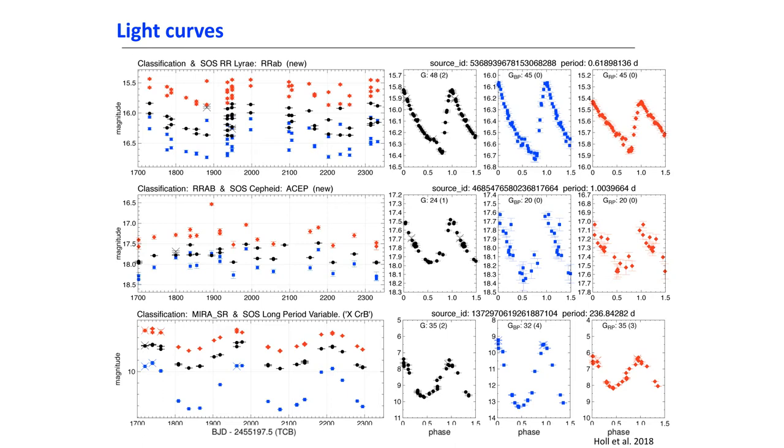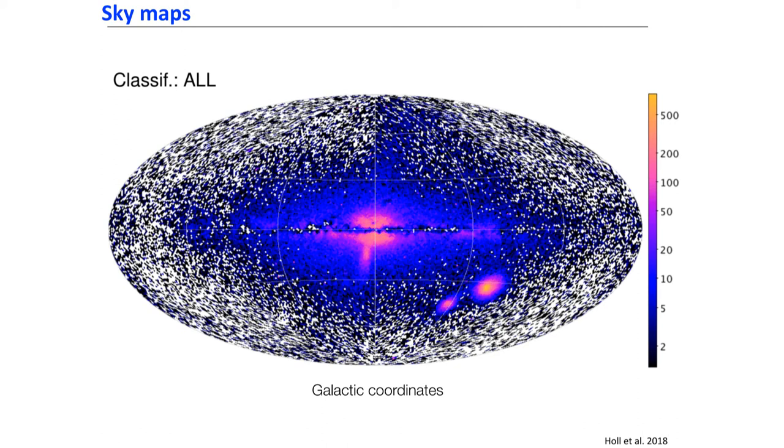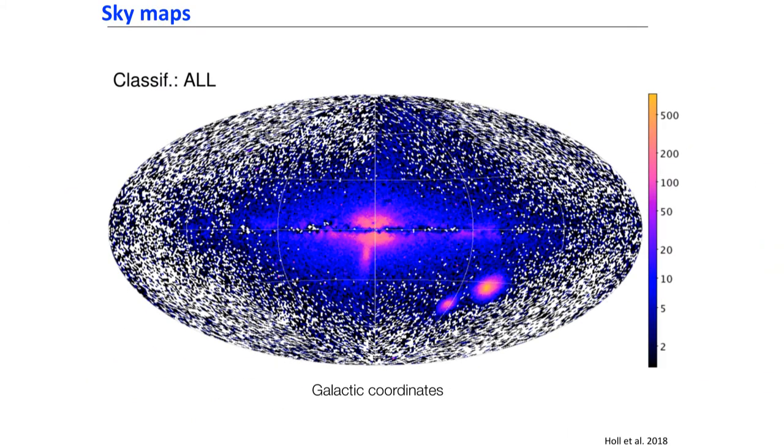If you do a map on the sky of all the classes detected, you see already some features. For example, you have a little finger going out of the bulge, which is the Sagittarius dwarf galaxy, and you have a band above, which is the Sagittarius stream. Globally, the RR Lyrae are tracing this Sagittarius stream.